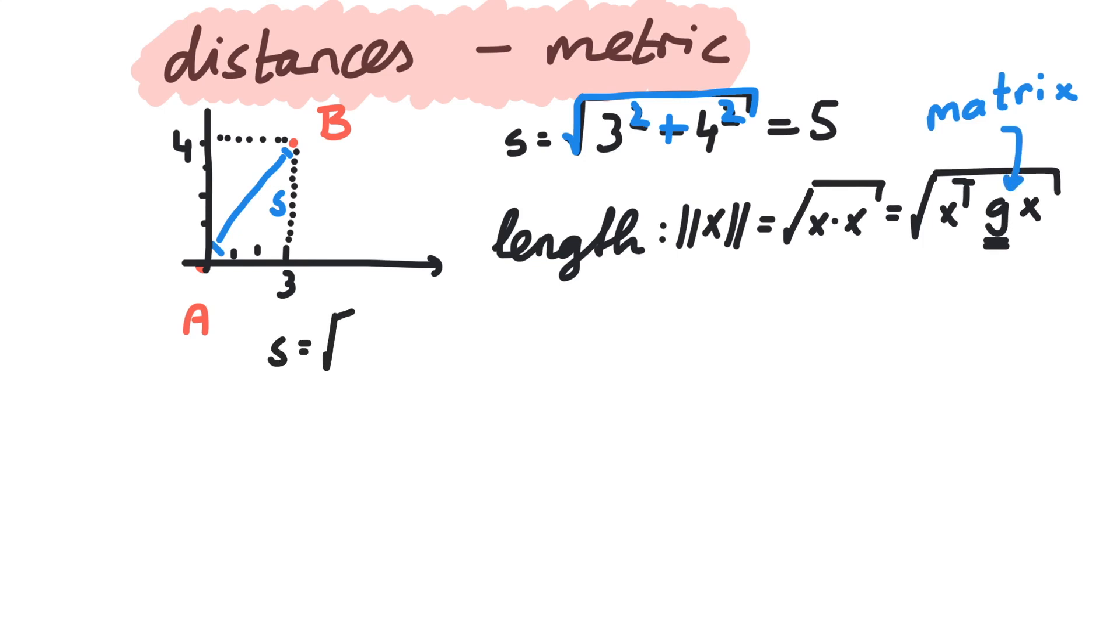In index notation, we can write this as xi gij xj. In Euclidean space, that is flat space, the metric looks like this, where the first row and column corresponds to x and the second row and column corresponds to y. And our vector x from the previous example reads 3, 4.